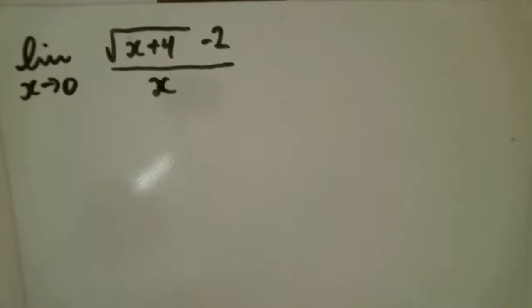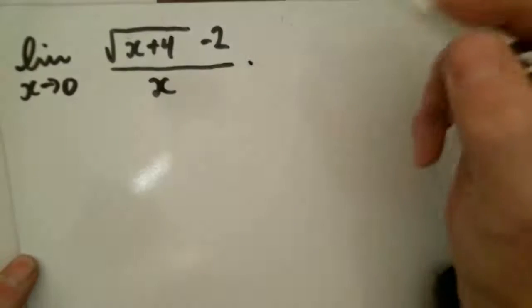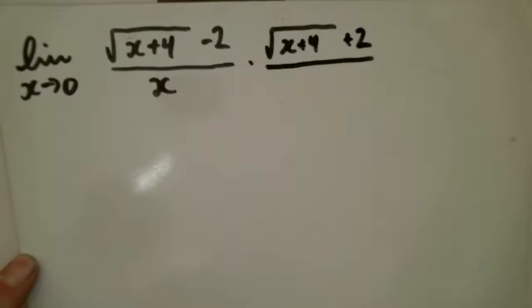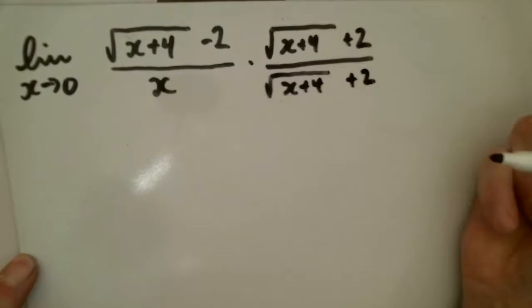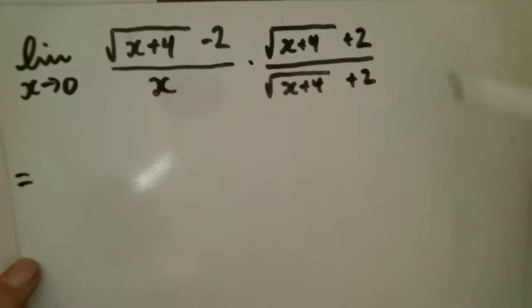What we can do is rationalize the numerator by multiplying by the conjugate. If we multiply the top by the conjugate, we have to multiply the bottom by the conjugate. We'll end up with a new function that is an equivalent form but hopefully has a limit that we can evaluate when x equals 0.